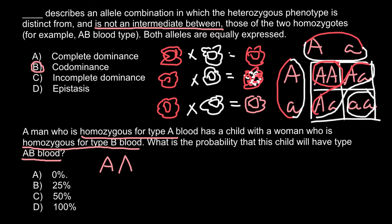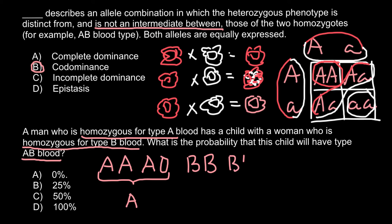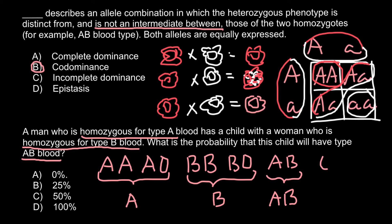In a diploid organism, the possible genotype combinations are: AA and AO — both producing blood group A phenotype; AB — producing blood group AB; and OO — producing blood group O. So six possible genotypes produce four phenotypes: A, B, AB, and O.